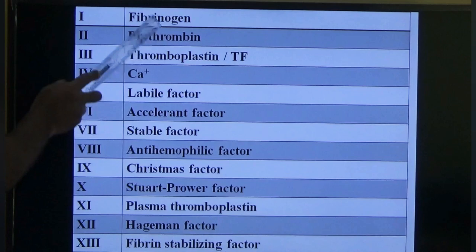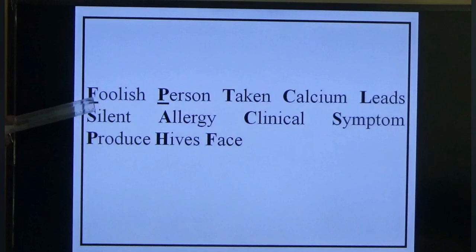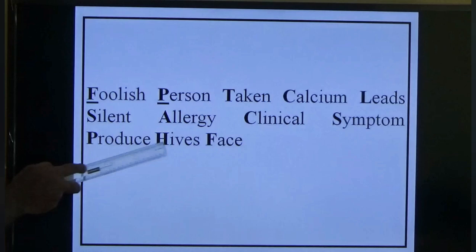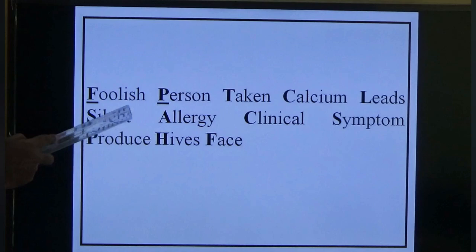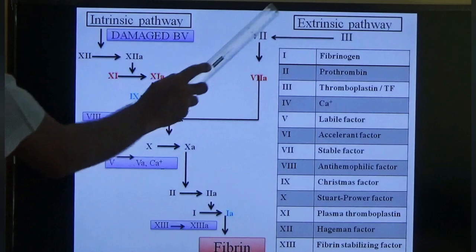A mnemonic to remember coagulation factors: 'Foolish persons taken calcium leads to silent allergy, clinical syndrome produce higher science phase' — where F means fibrinogen, P means prothrombin, T means thromboplastin. There are two pathways: intrinsic pathway and extrinsic pathway.